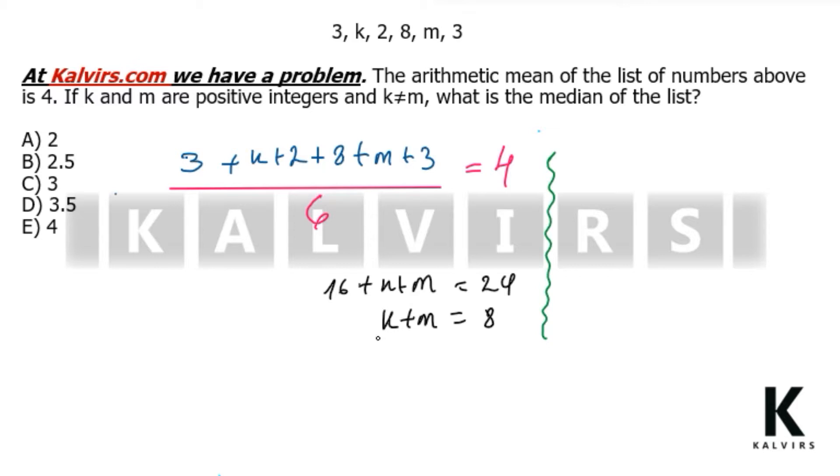And then, the possible values are 7 and 1, 6 and 2, and 5 and 3. Because 4 and 4 is not a possible case, since the question says that k is different to m, and we don't have to consider this.